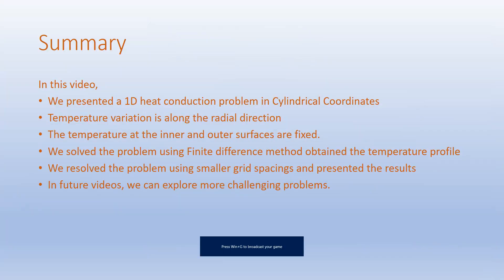To summarize: in this video we presented a 1D heat conduction problem in cylindrical coordinates, where the temperature variation is along the radial direction and the temperatures at the inner and outer surfaces are fixed. We solved the problem using the finite difference method and obtained the temperature profile. We also resolved the problem using smaller grid spacings and presented the results. In future videos we can explore more challenging problems. If you have any questions or comments, please post them. Thanks for watching.